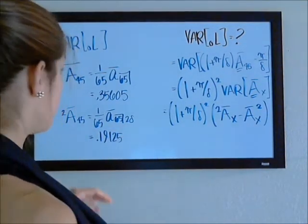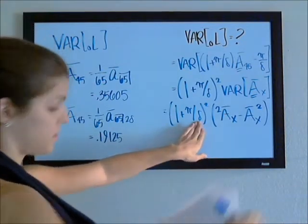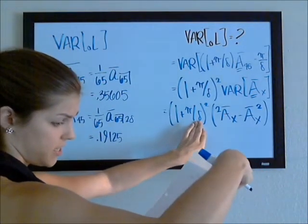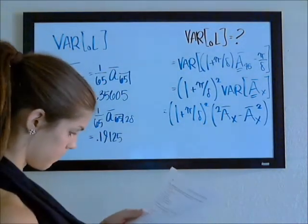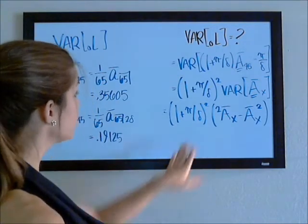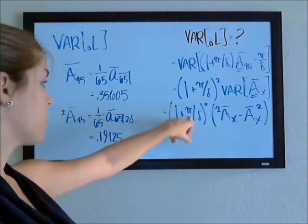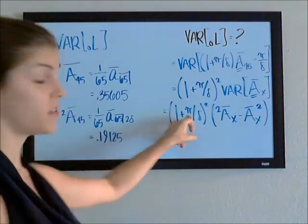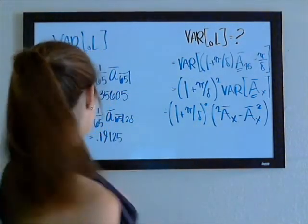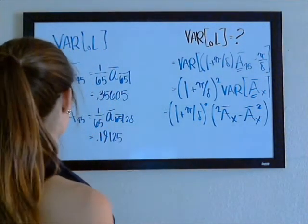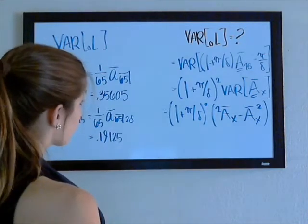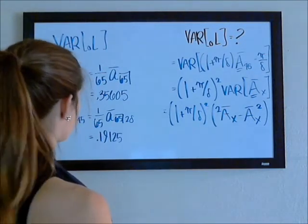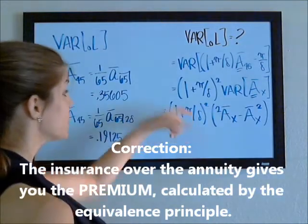Now, if you wanted to, we have the force of interest is 0.04, and we know that premiums are calculated according to the equivalence principle. So, if you wanted to, you could find the corresponding annuity here, and then you could take the insurance over the annuity to get the equivalence principle.